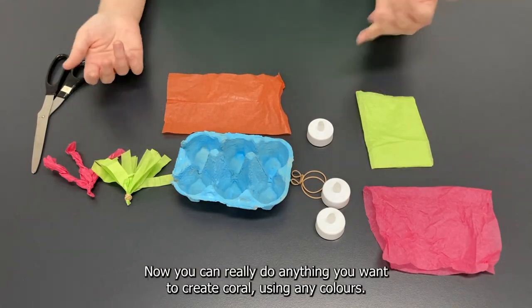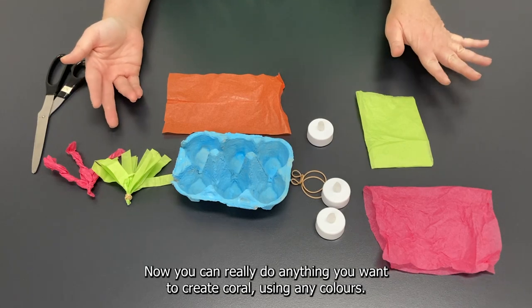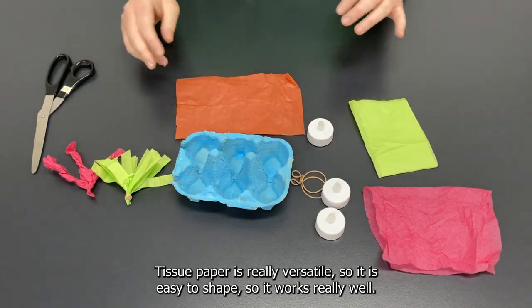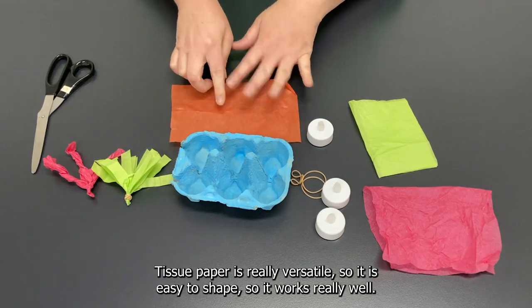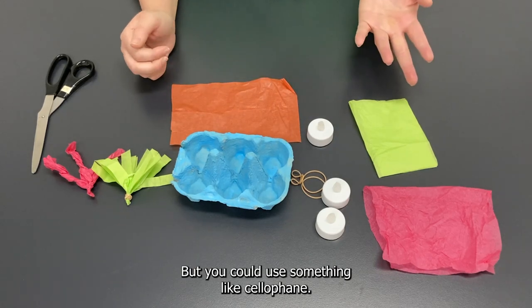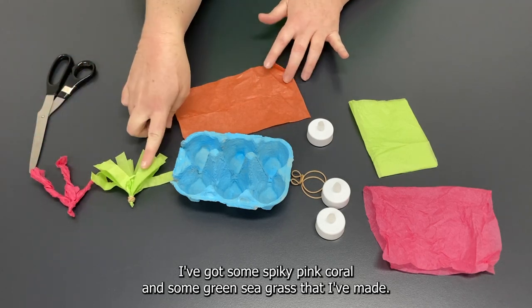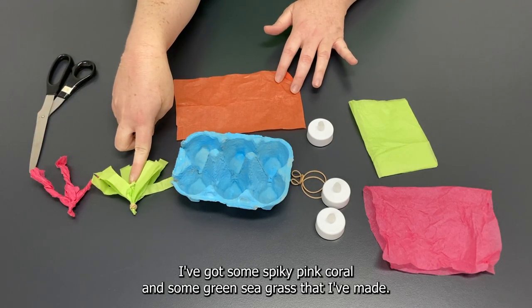All right let's start with the coral. Now you can really do anything you want to create coral using any colors. Tissue paper is really versatile so it is easy to shape so it works really well but you could use something like cellophane. I've got some spiky pink coral and some green sea grass that I've made.